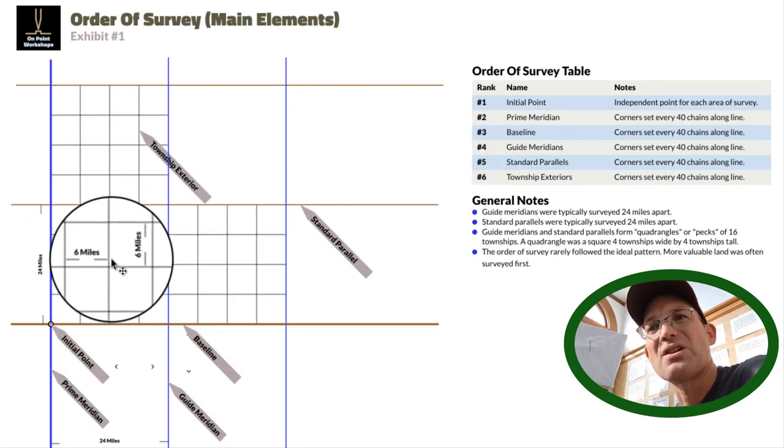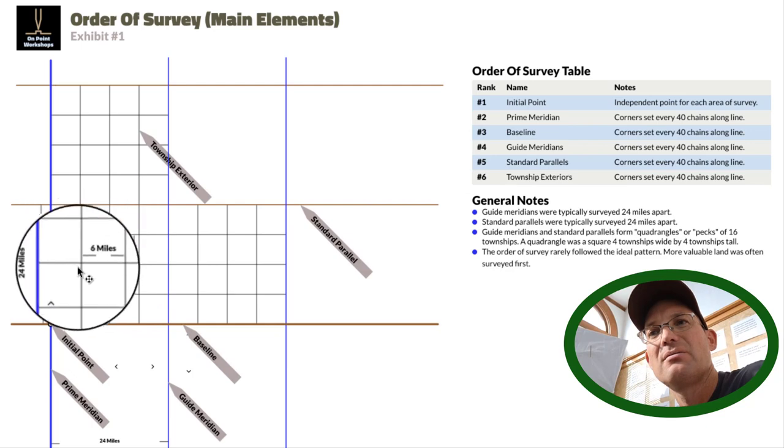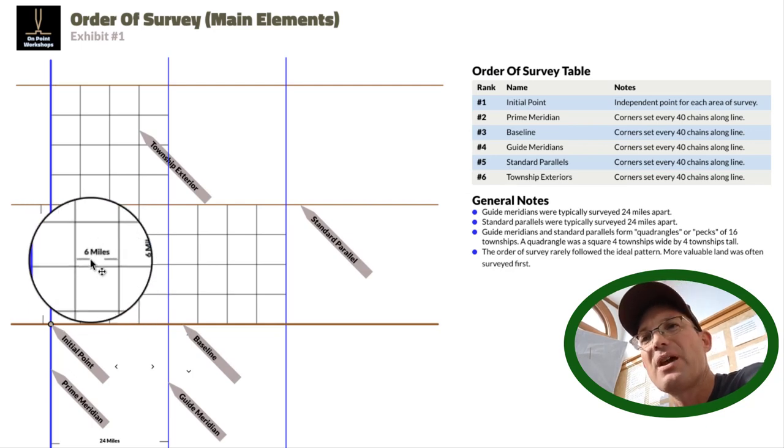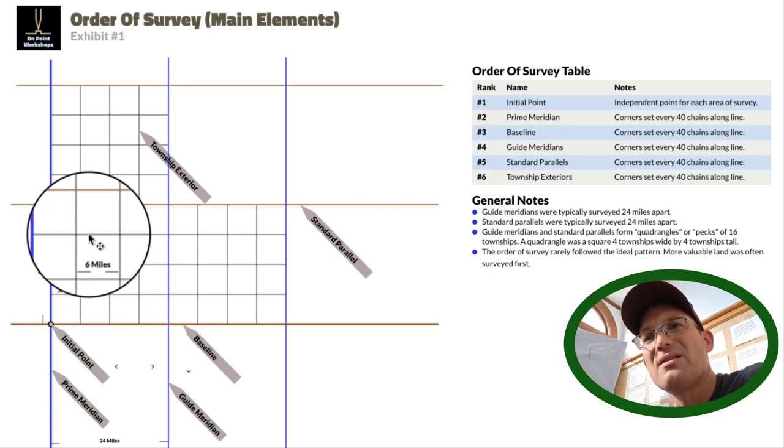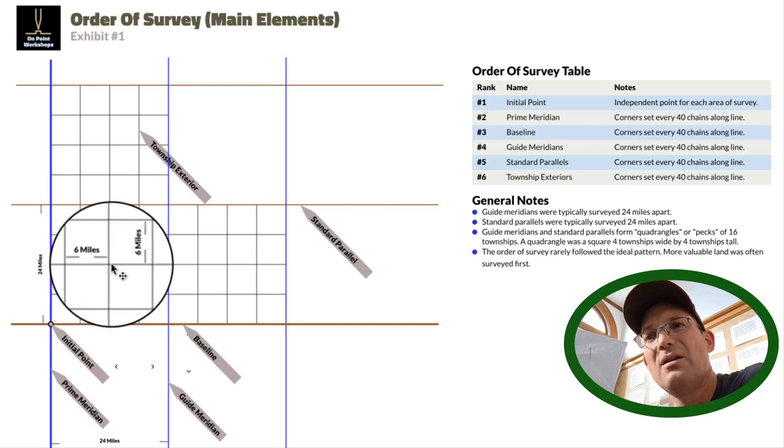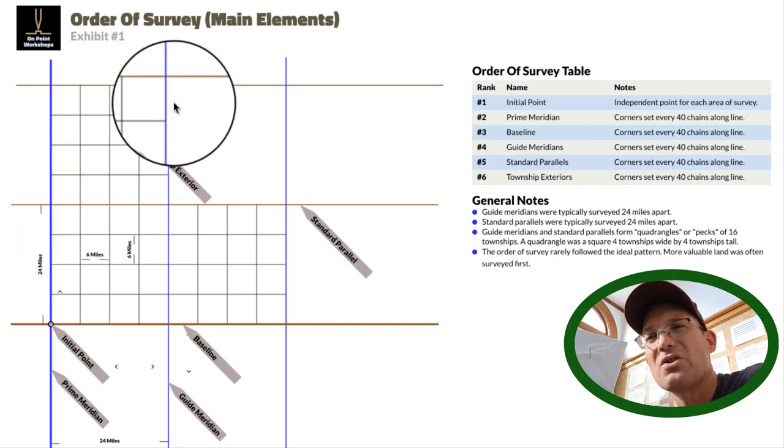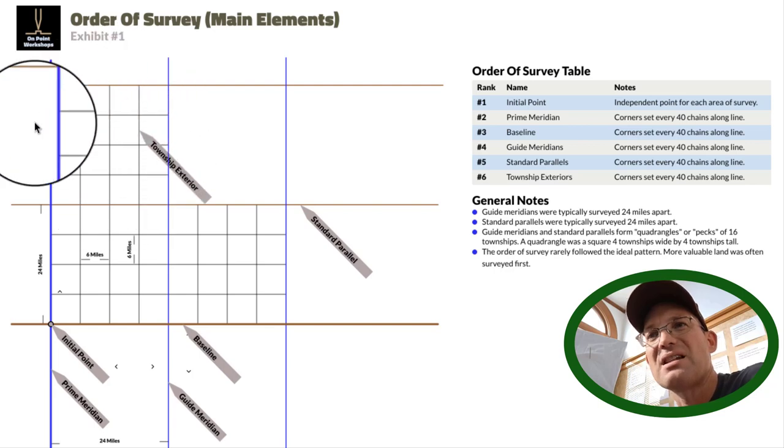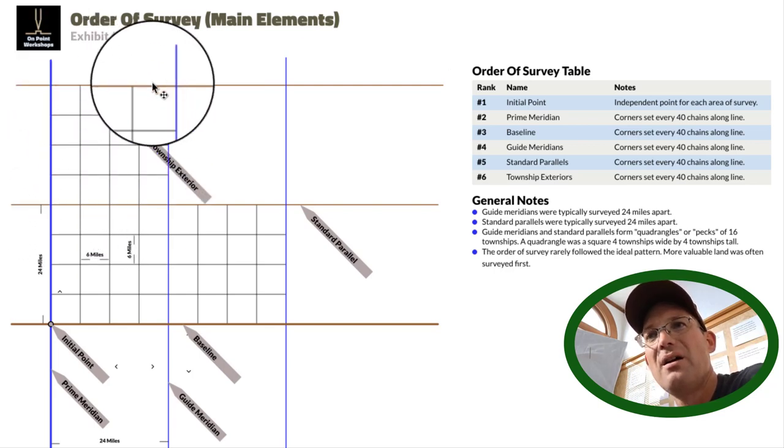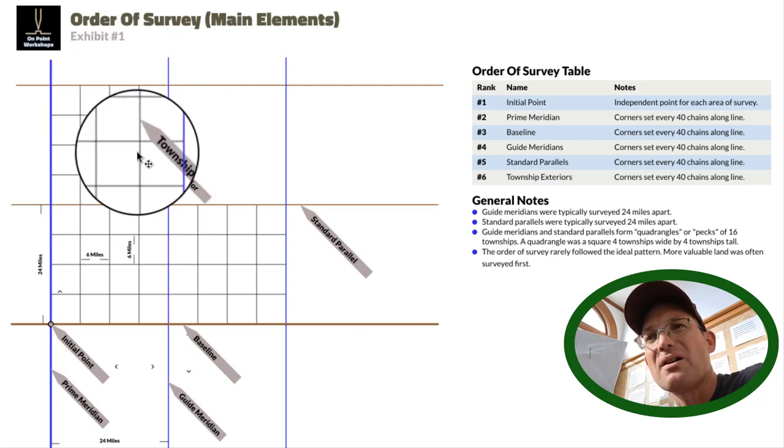Those townships are six miles by six miles square, roughly square. As they survey these, they set a monument every 40 chains or half mile. This is the exterior. You can see we have 16 townships in one of these bigger squares that's formed by the meridians and the baselines or standard parallels.